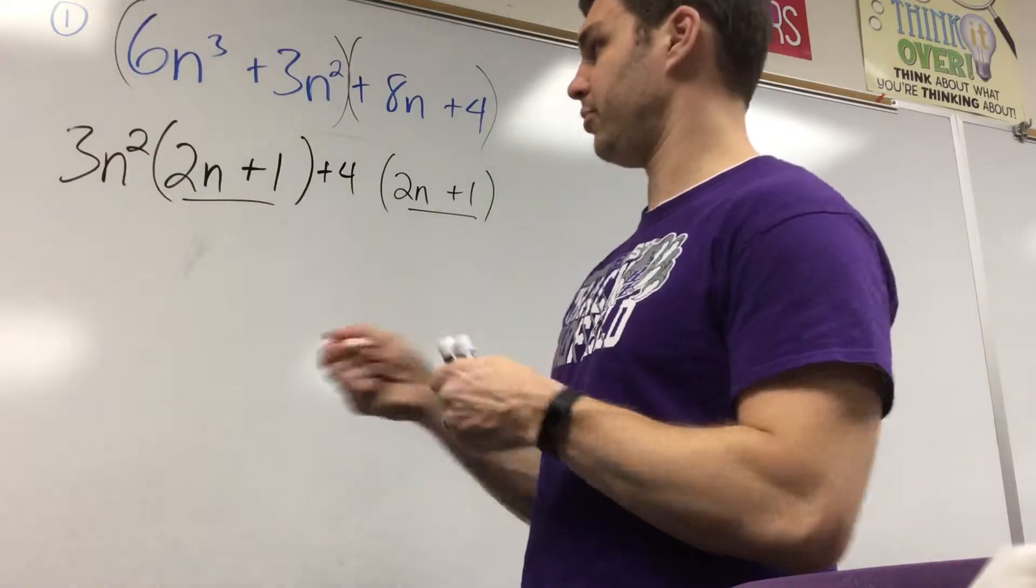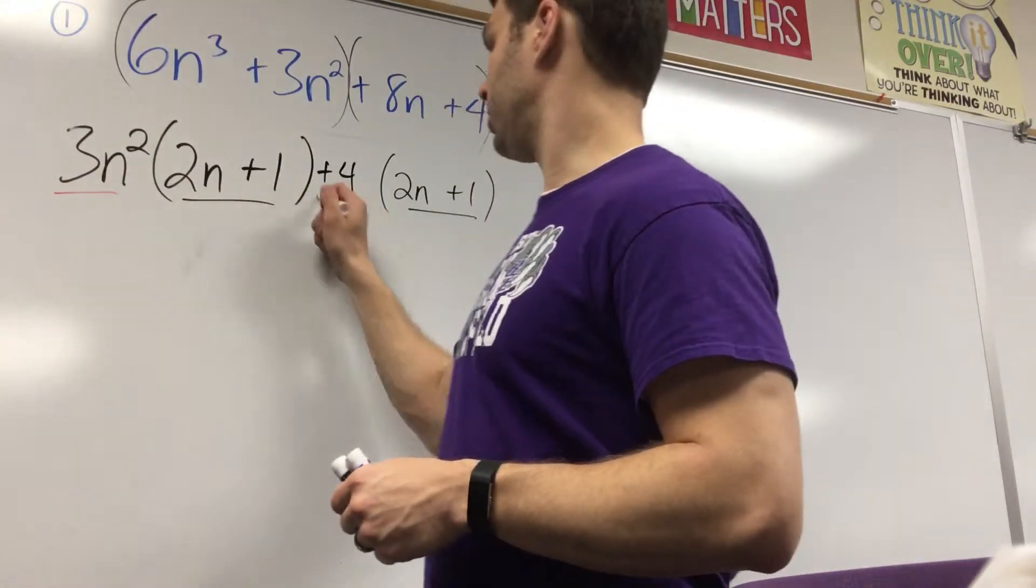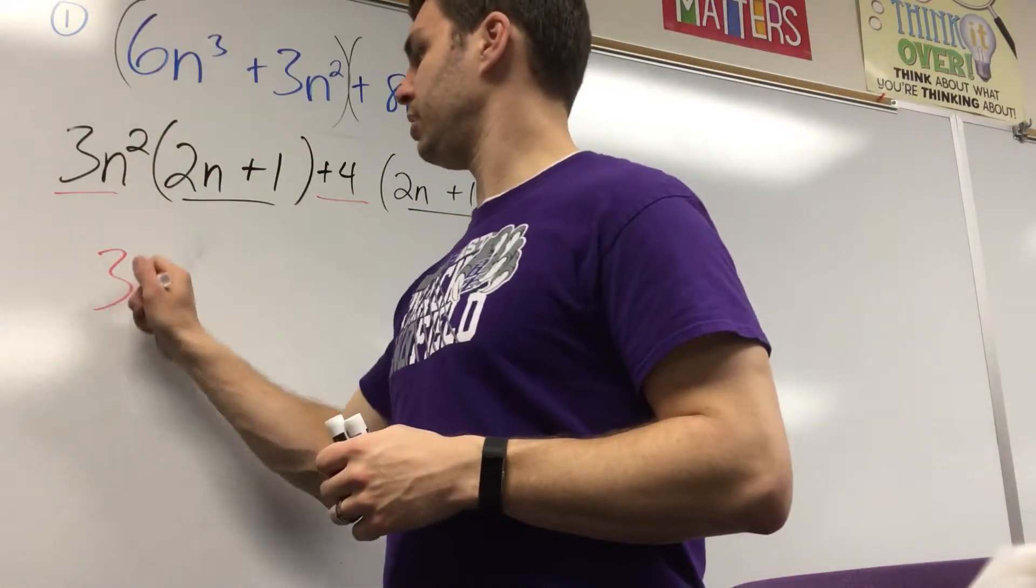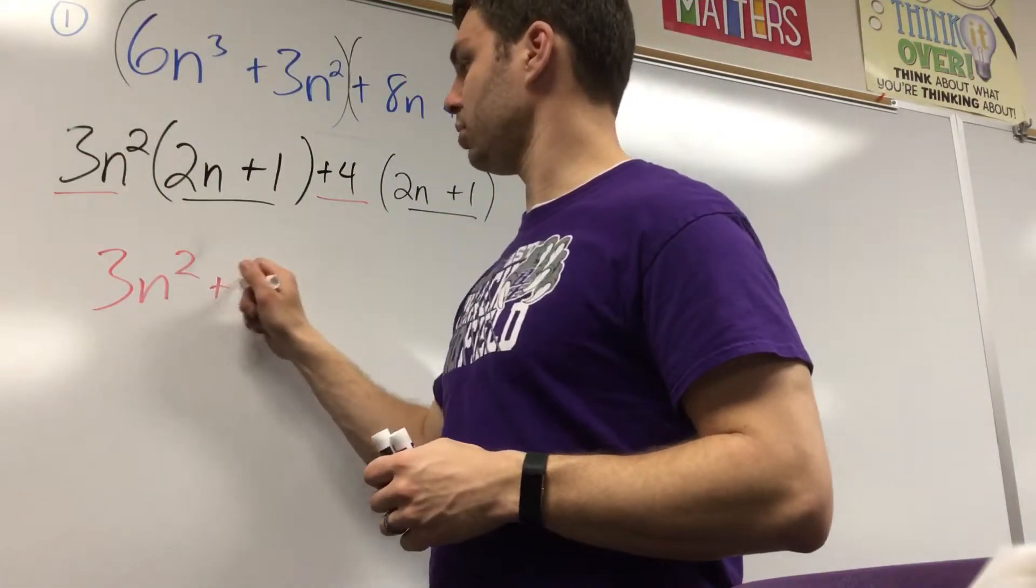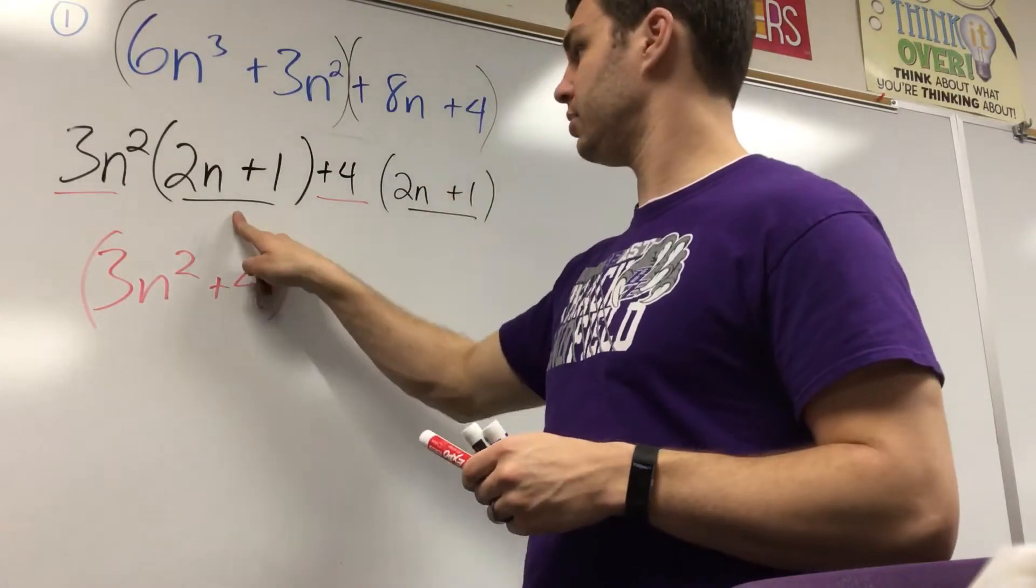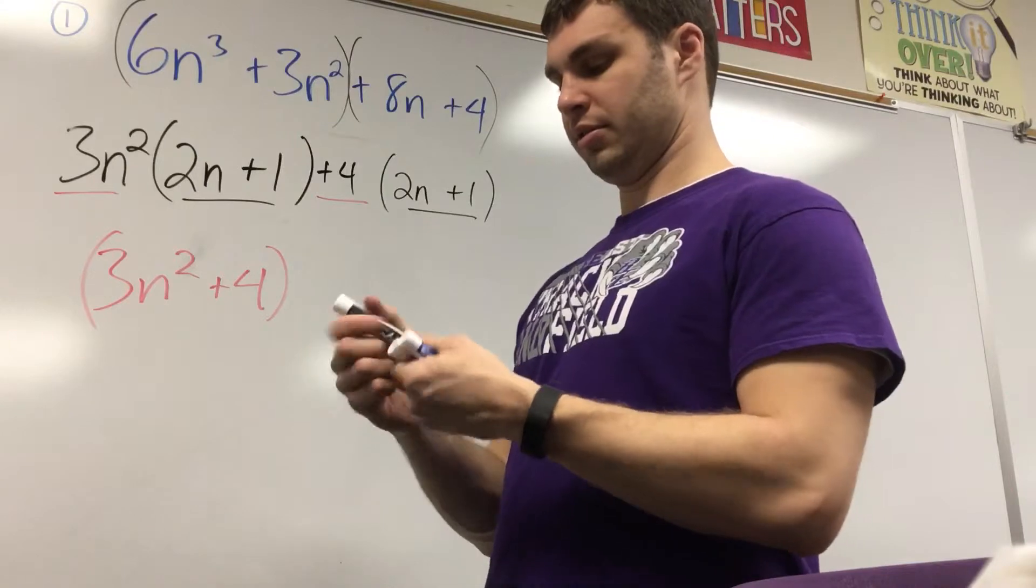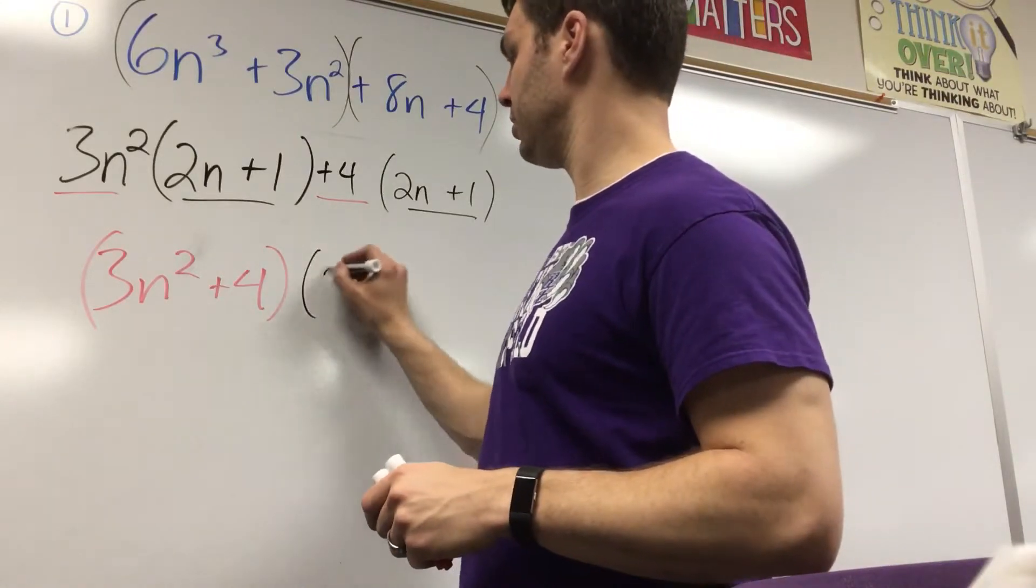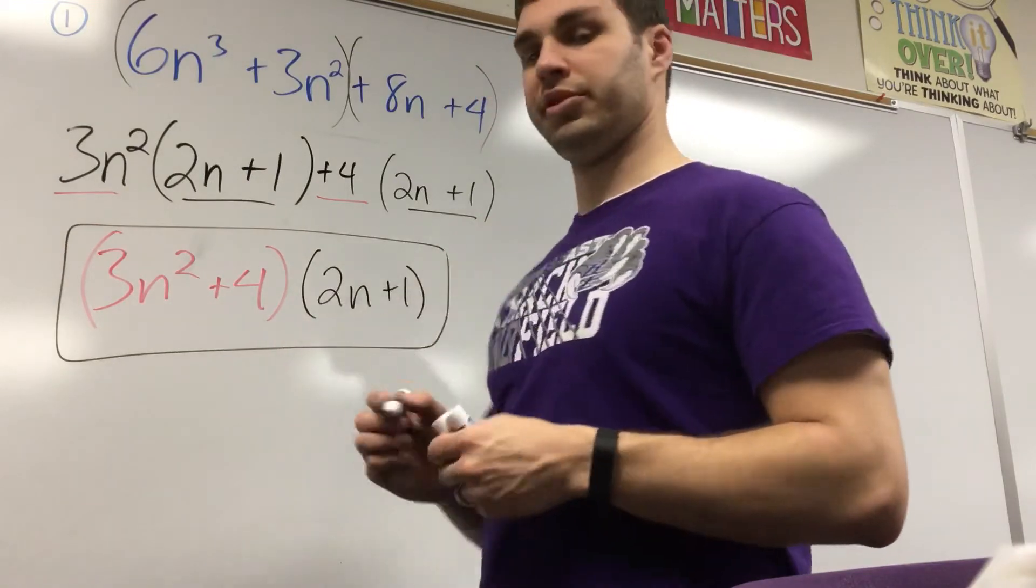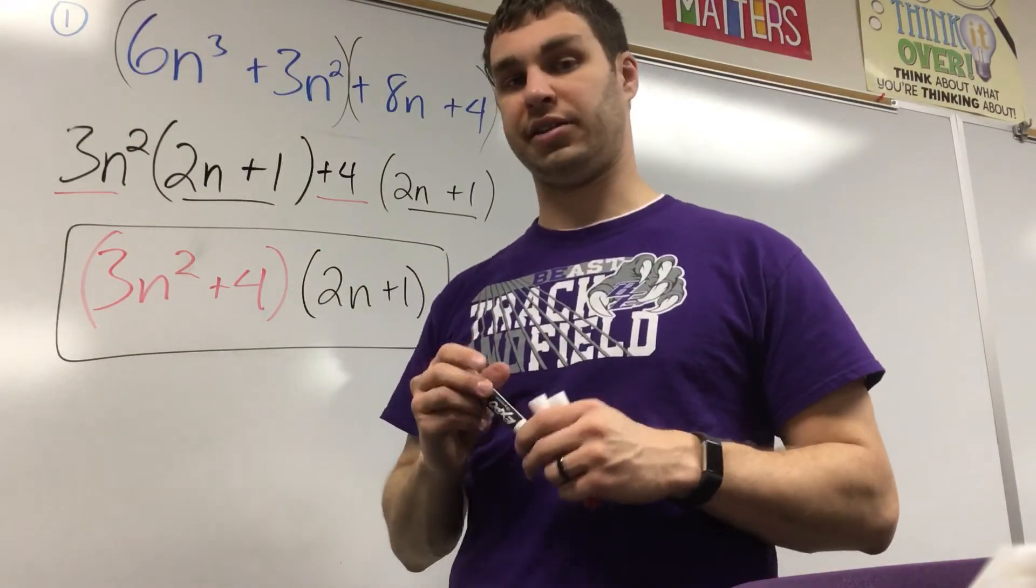I'm going to use the help of my red marker here. I'm going to write those parts that are outside of the parentheses together, 3n squared plus 4, and then I just only write one of the parentheses, 2n plus 1. Both those binomials together are how you factor by grouping.